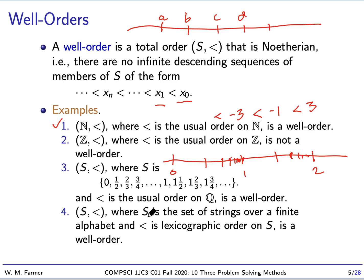The final example is: S is a set of strings over some finite alphabet, and < is lexicographical order, the kind of order you would see in a dictionary. That order means that AB is less than BC because A is less than B, and AB is also less than AC because the A's are the same but B is less than C.